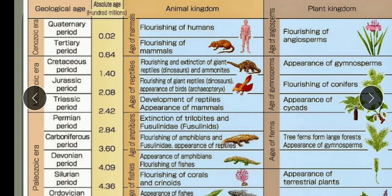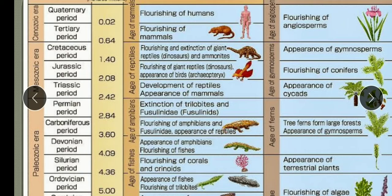The Cenozoic era is divided into two periods: tertiary and quaternary. The tertiary period has five epochs: Paleocene, Eocene, Oligocene, Miocene, and Pliocene. In the tertiary period, modern mammals developed and flourished. The first man-like ape originated, grasses and dicots appeared, angiosperms flourished, and there was an explosive rise of mammals and diversification. Modern birds also became abundant during this tertiary period.